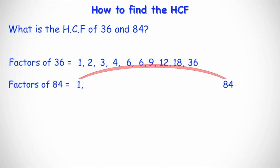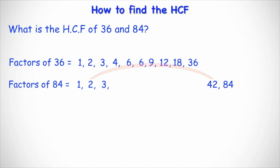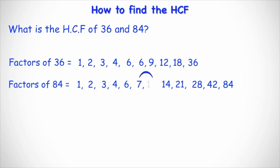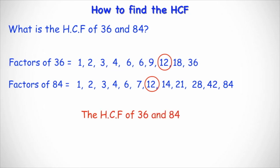Similarly, we do the same for 84. We have 1 and 84, and 2 and 42. Remember, to get the partners I'm dividing 84 by each number. Can 3 go into 84? Yes — 84 divided by 3 is 28. Can 4 go into 84? Yes — 84 divided by 4 is 21. Can 5 go into 84? Not exactly. Can 6 go into 84? Yes — 84 divided by 6 is 14. Can 7 go into 84? Yes — 84 divided by 7 is 12. And that's the end of the factor list for 84, since 8 and 9 don't go in exactly. Looking at both lists, the biggest number that appears in both is 12. Therefore, the highest common factor of 36 and 84 is 12. And that's all there is to it.